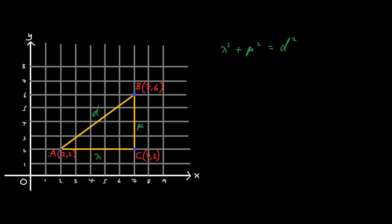Now, using A we know that x1 equals 2. Using B we know that x2 equals 7. Using A we know that y1 equals 2. Using B we know that y2 equals 6.